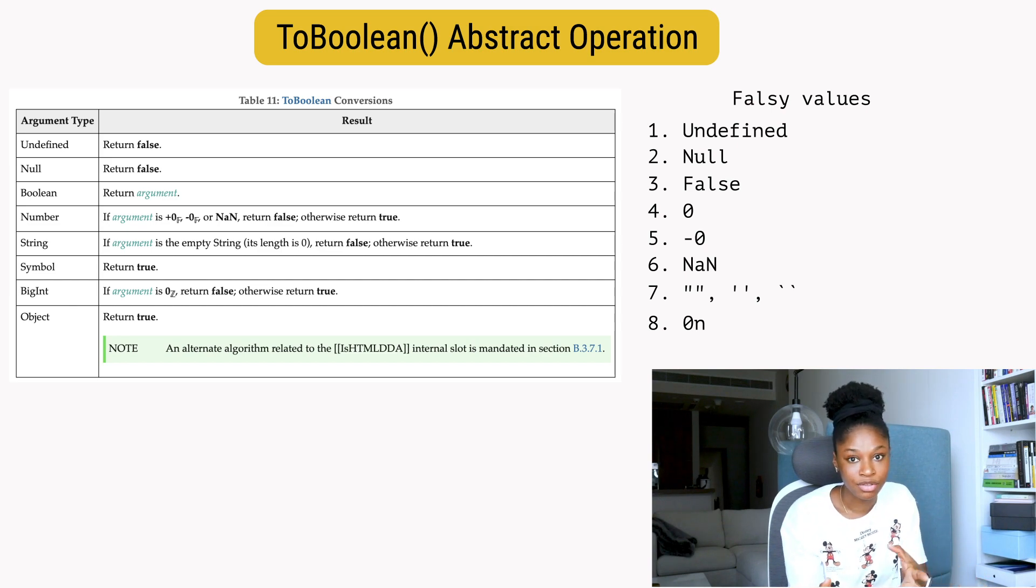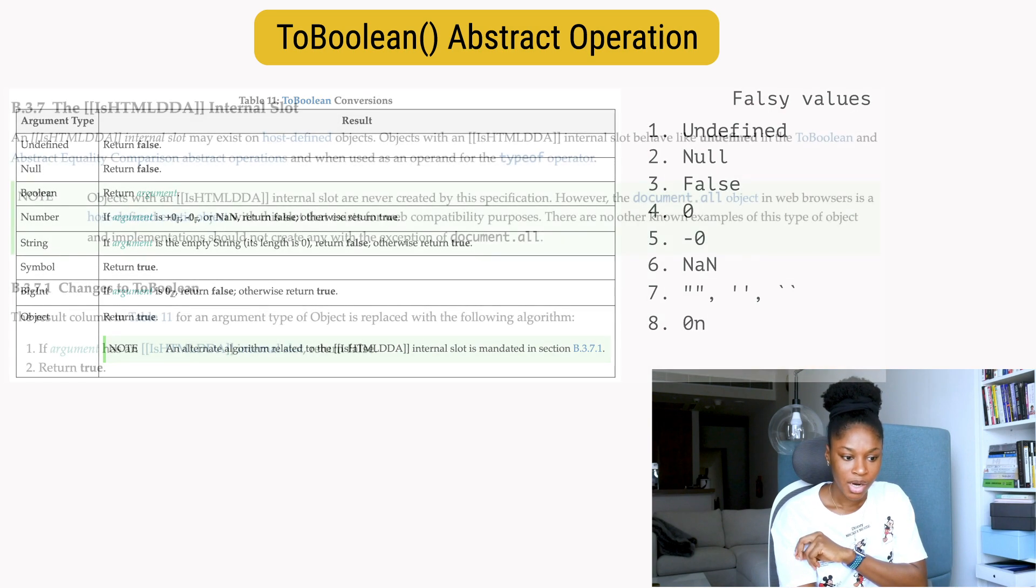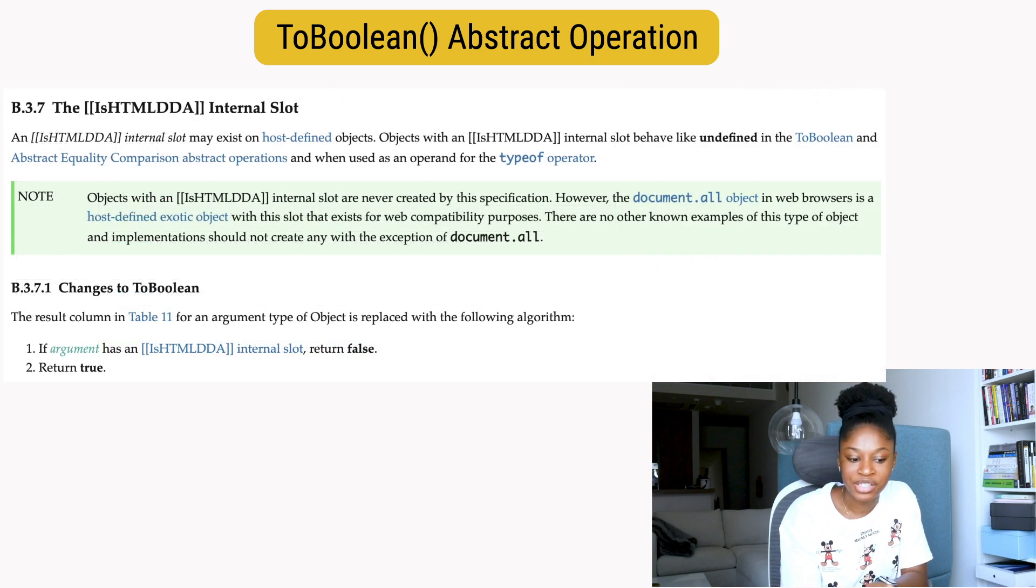So generally, objects in JavaScript are truthy values. But it also says an alternate algorithm related to the IsHTMLDDA internal slot is mandated in section B.3.7.1. Let's check that out.